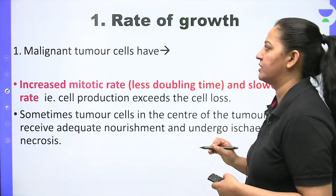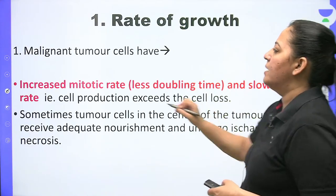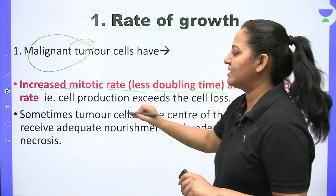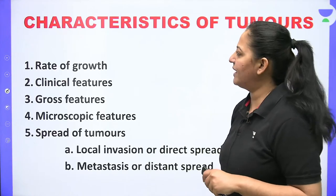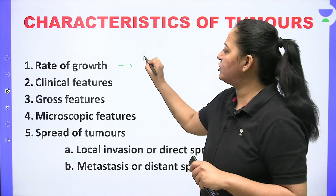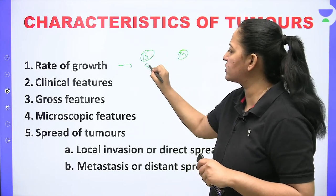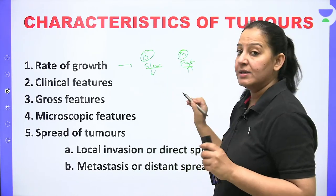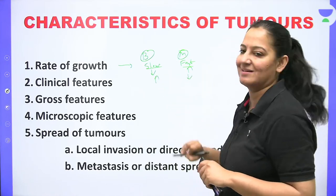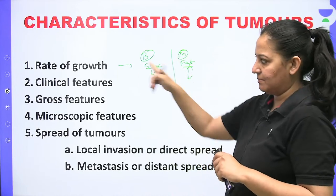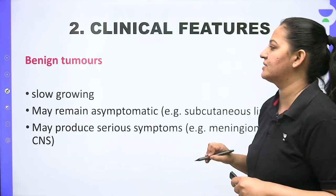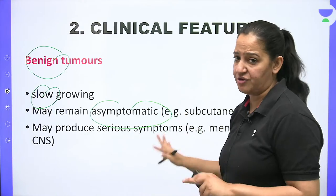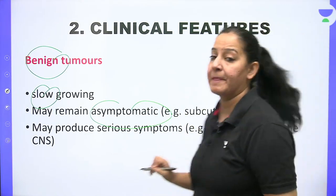Microscopic features: presence of anaplasia defines malignancy. Anaplasia has 10 features. All 10 are absent in benign and present in malignant tumors. If a tumor shows these 10 features, it is definitely malignant. The first feature is loss of polarity. Normally, the nucleus is oriented towards the basement membrane — this is basal polarity. But in malignant tumor cells, the nucleus lies away from the basement membrane, haphazardly arranged — this is loss of basal polarity.